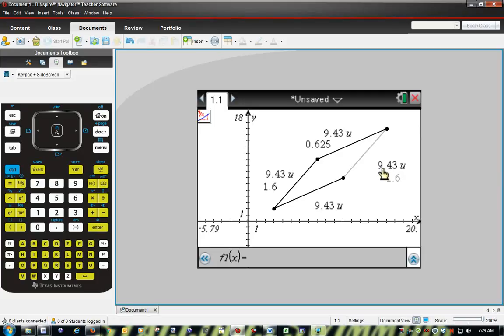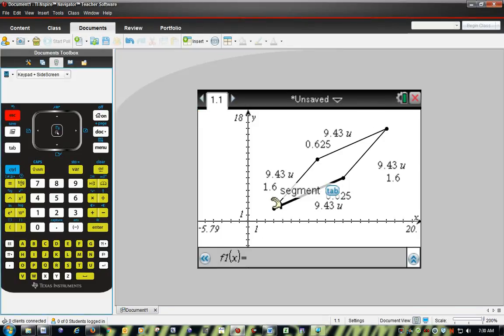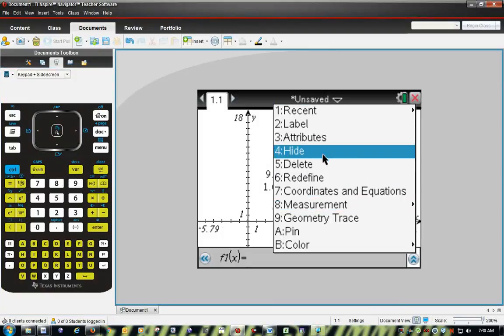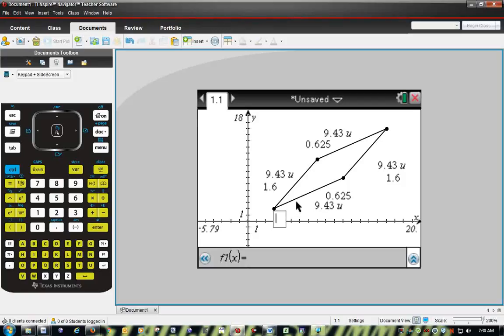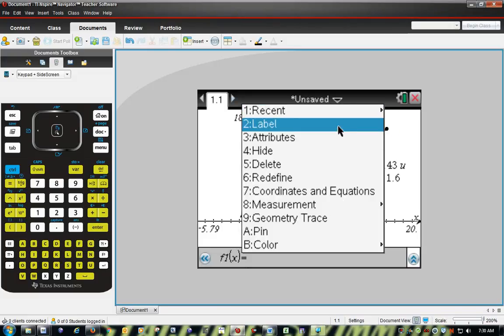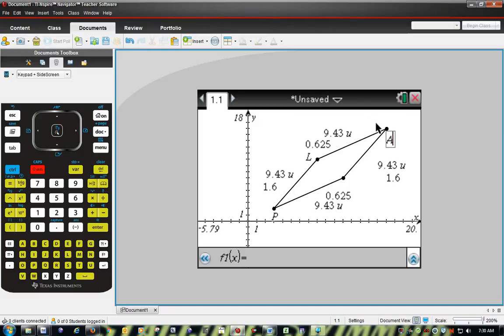0.625. Over here is 1.6. So I was able to calculate all of this. I'm going to label these so it's easier to see. In order to do that, all you have to do is hit control menu.